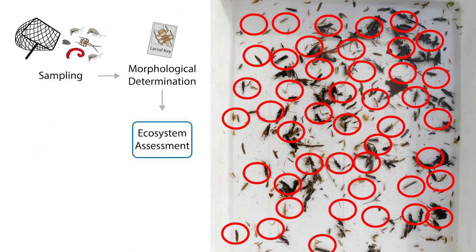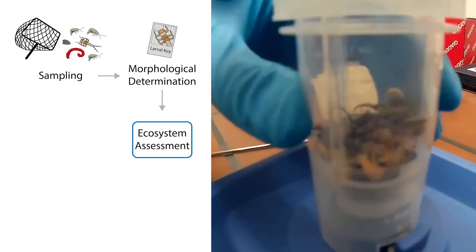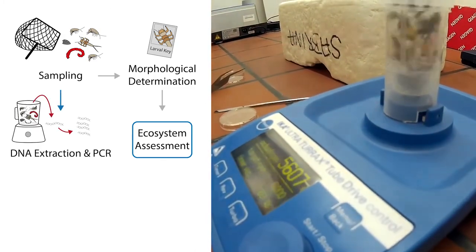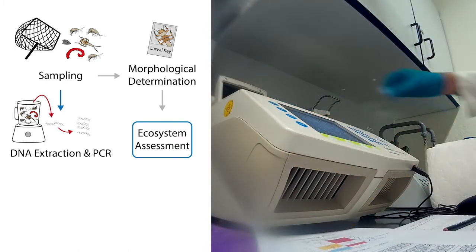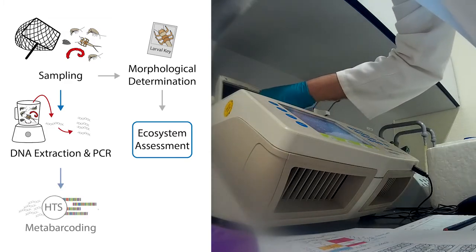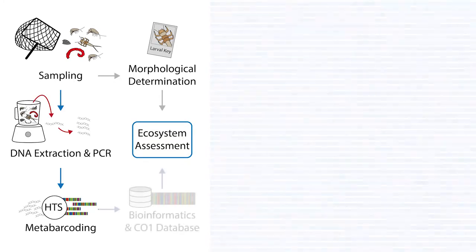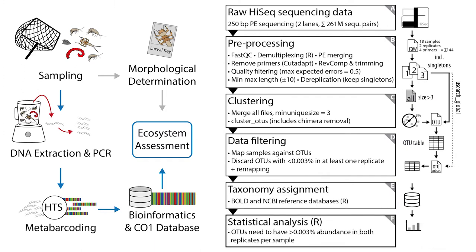However, recent developments in sequencing technology now enable us to identify all specimens present in a sample simultaneously. DNA from complete samples — often containing hundreds of organisms — is extracted by homogenizing the organisms, extracting DNA, and amplifying the barcoding gene using polymerase chain reaction. Those fragments are sequenced with high-throughput sequencing, generating millions of sequences, which are bioinformatically processed and compared to the CO1 reference database to identify the taxa present.